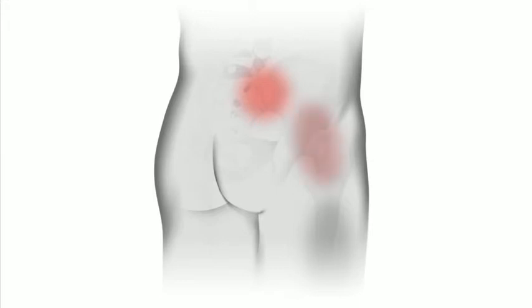Sacroiliac joint pain occurs in a predictable area — over the sacroiliac joint, the back of the buttocks. It might go to the very top part of the thigh, but does not typically go up the back.